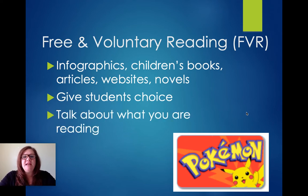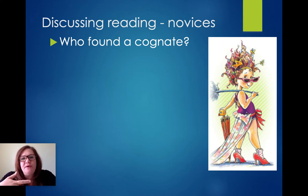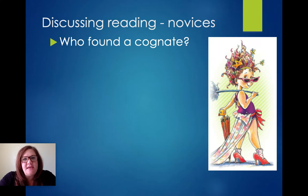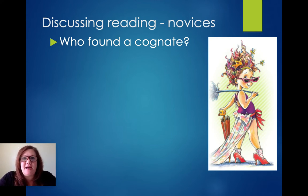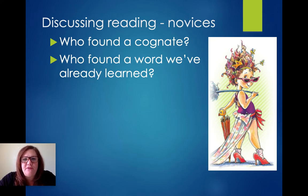At the novice level, you can talk to students about what they are reading. One technique I like early on is asking 'Who found a cognate?' Really focusing on cognates benefits students long-term. Students can also be asked to find a word they've already learned, picking out vocabulary they recognize from their classroom library materials.